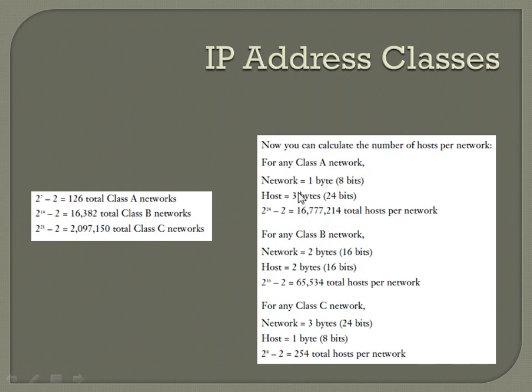The subtraction of two is because of the network address and the broadcast address. Whenever you're calculating usable hosts, you're always going to have to subtract two for the network and the broadcast address because they can't be used.